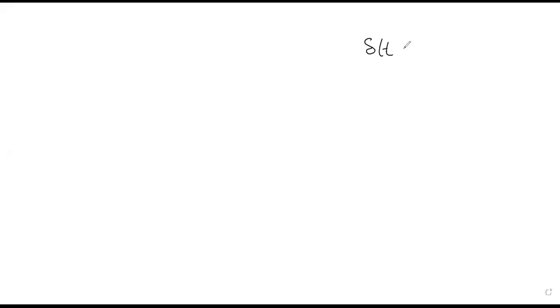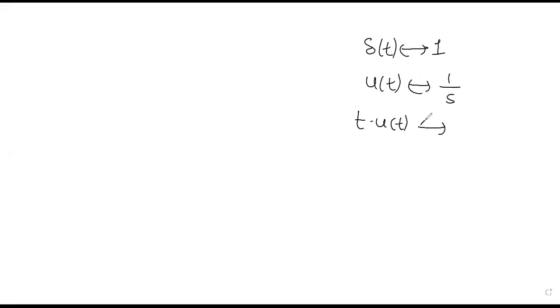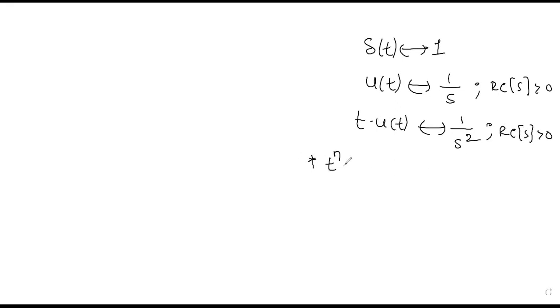Let us write all the Laplace transform pairs together. Delta of T has Laplace transform 1, valid for all values of S with no restriction on ROC. U of T has Laplace transform 1/S, and T·U(T) has Laplace transform 1/S², with ROC: real part of S greater than 0. T^N·U(T) has Laplace transform N!/S^(N+1).